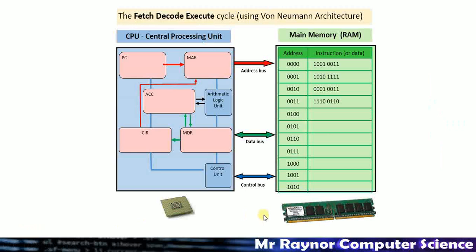Back to our diagram — the address buses are now added in. Anything in red represents an address being moved from place to place. The program counter copies its value into the memory address register, then we go along the address bus to look at that particular address. The data gets passed along the data bus back to the CPU and is first stored in the memory data register, then copied into the current instruction register. The control bus is shown in blue, with the control unit sending signals to coordinate all the components.